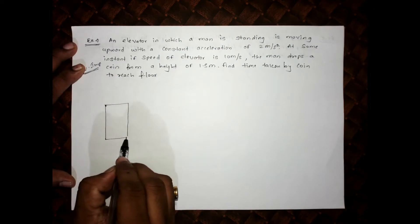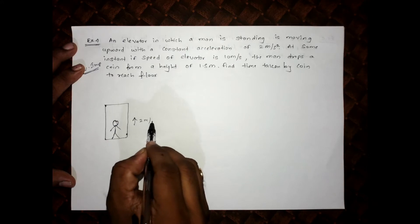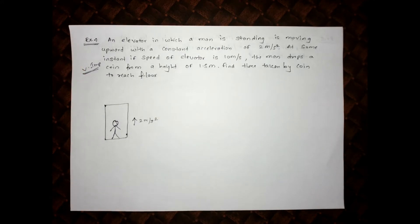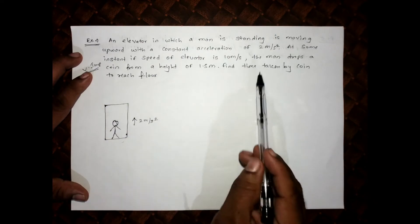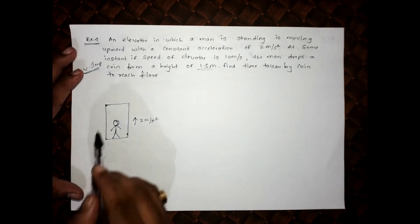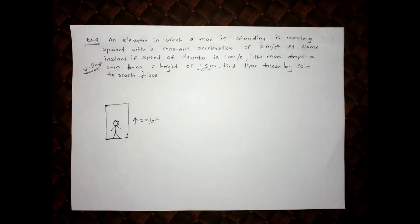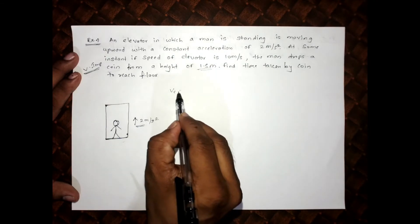There is an elevator with a man inside it, and the elevator is going upward with an acceleration of 2 meter per second square. At some instant, the speed of the elevator is 10 meter per second. At that instant, the man drops a coin from a height of 1.5 meter. Find the time taken by the coin to reach the ground.